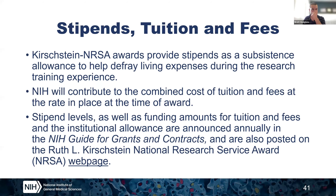One of the nice things about the MSTP T32 application is that it's a relatively streamlined one. The actual categories of cost that can be requested in the budget are very streamlined — there are only defined categories that can be requested. Those categories, which I'm going to talk about today, are stipends, tuitions and fees, training-related expenses, child care costs, travel, and facilities and administrative costs.